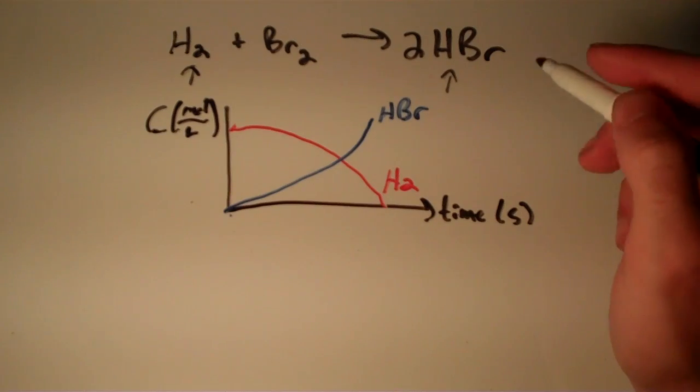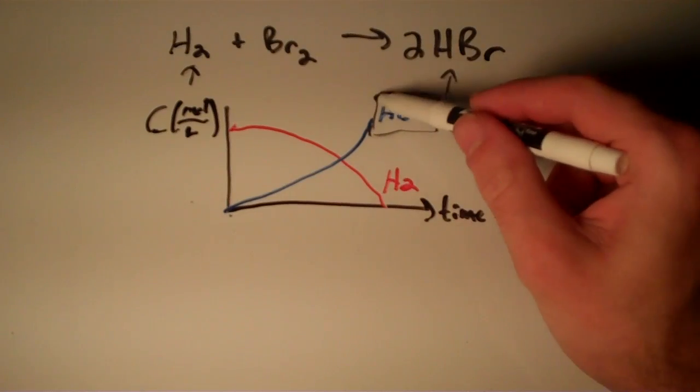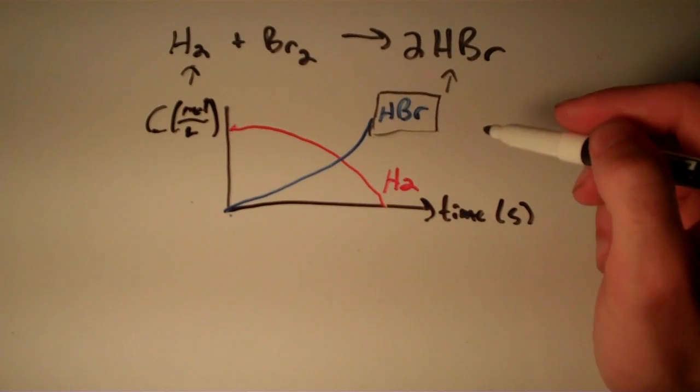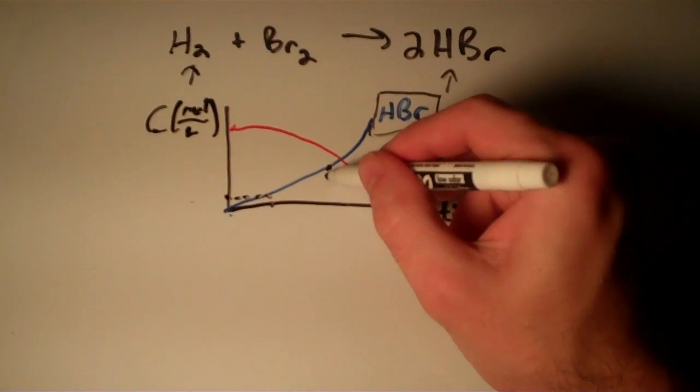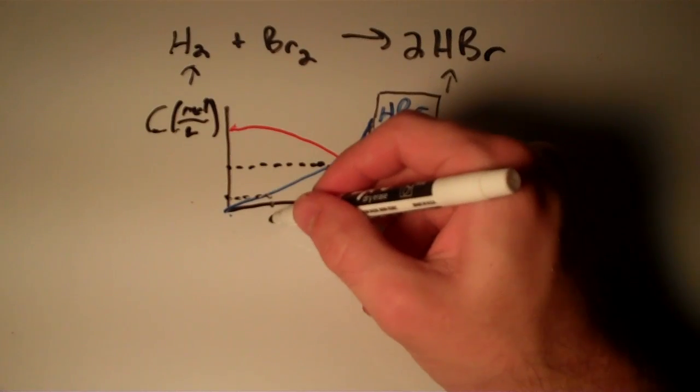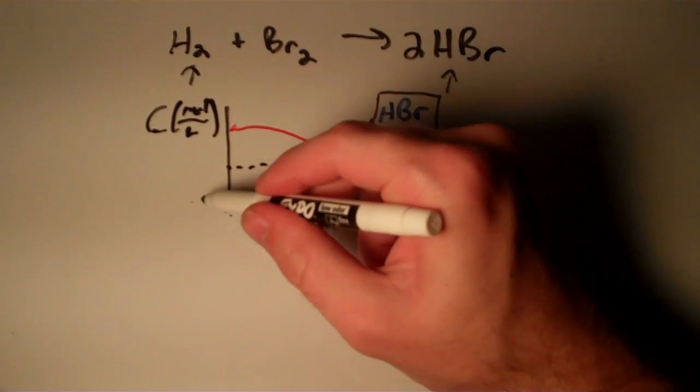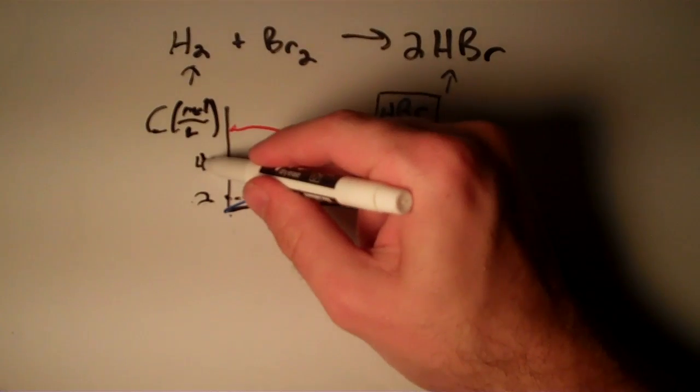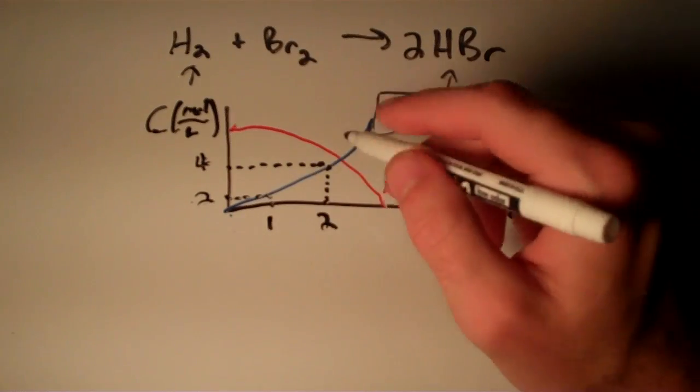Generally what we do is we pick two points. So let's say I want to find out how fast the concentration of HBr is changing. I'm just going to pick two points on this graph—I'll pick this one here and I'll pick this one here. Suppose this time is one second and this time is two seconds, and let's say that this concentration is two molar and this concentration is four molar.